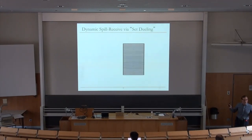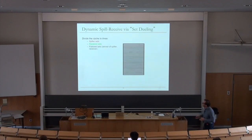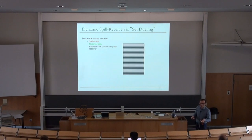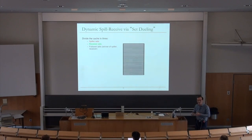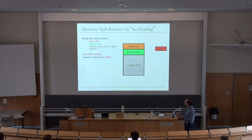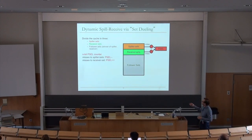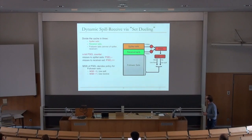This paper uses the idea of set sampling, called set dueling here. You divide each cache into three portions: spiller sets, receiver sets, and follower sets. By emulating spilling and receiving on dedicated sets you can observe which policy leads to fewer misses, then have follower sets adopt the best policy. The metric used is miss count, which may not be ideal since stall time is more important as misses can be overlapped.